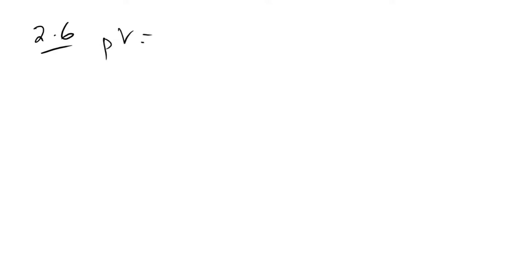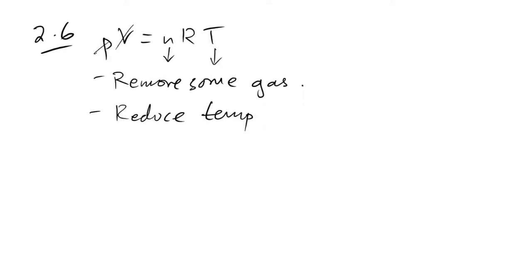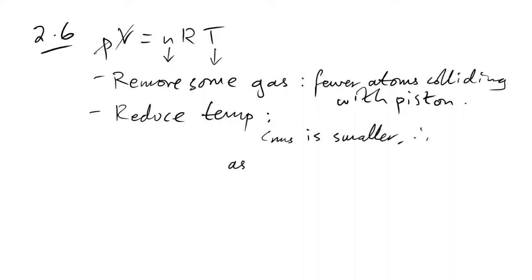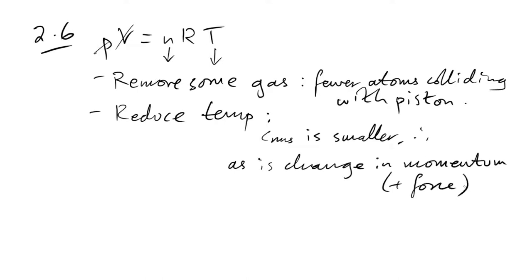The mixture stays the same — what could you do to reduce the pressure? Our equation is PV = NRT. We could remove some gas (N decreases) — fewer particles means fewer atoms colliding with the piston. We could also reduce the temperature, which means c_RMS is smaller, so the change in momentum and force is smaller. The mark scheme also says you could increase the volume, which means fewer atoms per square metre hitting the piston surface, reducing pressure.